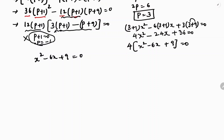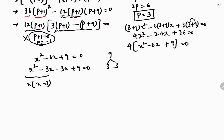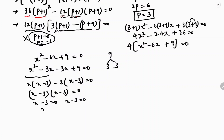Using split the middle term factorization: factors of 9 are 3×3. So x² - 3x - 3x + 9 = 0. Taking x common from the first two terms gives x(x-3), and taking -3 common from the last two terms gives -3(x-3). So (x-3)(x-3) = 0, meaning x - 3 = 0.